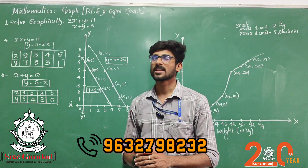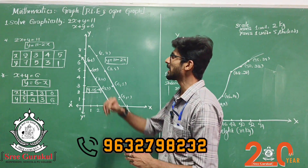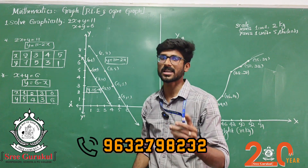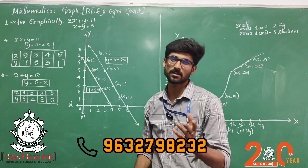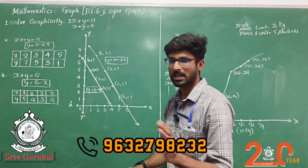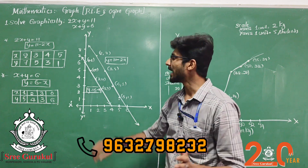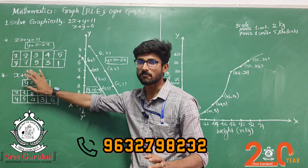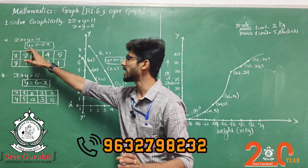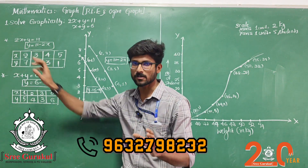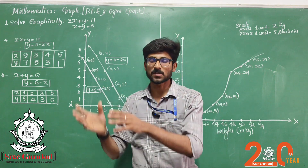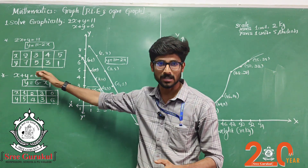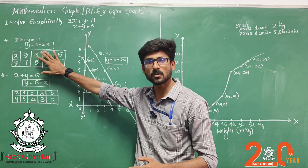In that chapter, two equations are given. One is a simple equation and the other may have a coefficient of 2 or something with X. Whatever the equation, ensure that you make Y the subject in both equations. The answer should have Y on the left side, with all the terms transposed accordingly.